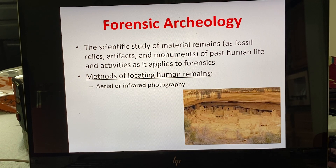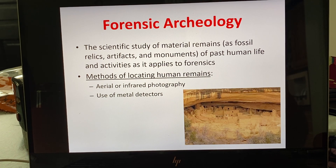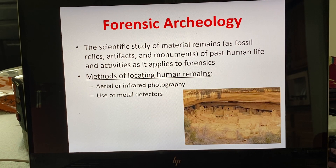Infrared identifies heat, so that would only work for a person who is still alive or recently deceased, since with algor mortis they'll lose body temperature until reaching ambient temperature. Metal detectors can be really useful because most of the time a person will have a watch, ring, earrings, or some type of metal. Also, someone trying to ensure a person is really dead will often shoot them through the head, and they usually won't dig under the body to retrieve the projectile, so metal detectors can also potentially find bullets and cartridge casings.